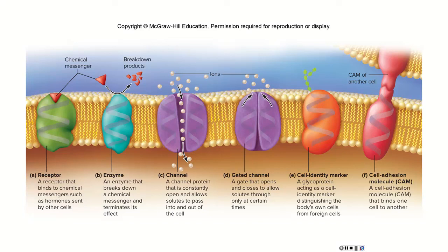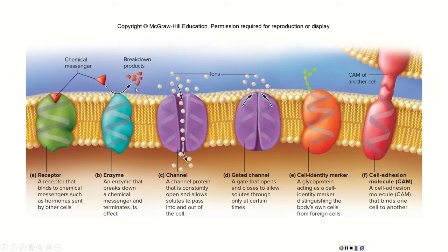Next, enzymes. We talked about enzymes in Chapter 2 — enzymes were catalysts that caused a reaction to happen faster than it would otherwise. Those enzymes could be floating around in the cell or they could be a part of the cell membrane. Here we can see a catalyst breaking down whatever this triangle molecule is. I guess we said it was a hormone — this enzyme is going to break this hormone down.